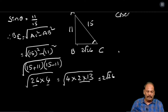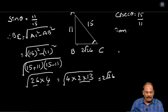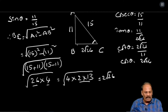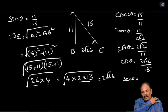Cosecant value: 15 by 11, reverse to the sine. Tan theta: 11 by 2 root 26. Cot theta: reverse to the tan, 2 root 26 by 11. Cos theta: adjacent side by hypotenuse, that is 2 root 26 by 15. Secant theta: reverse to the cos, 15 by 2 root 26. One more sum is also over.